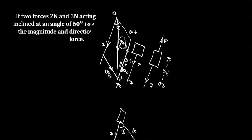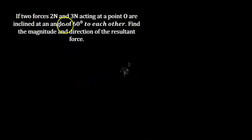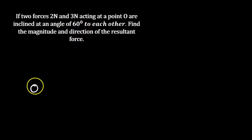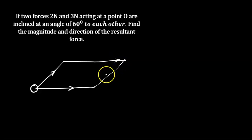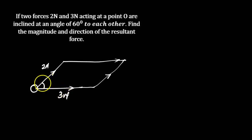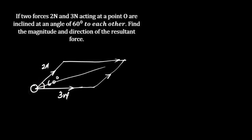Let's use this example to understand it further. Two forces — two newtons and three newtons — acting at a point O are inclined at an angle of 60 degrees. Parallelogram law of vectors tells us they form the two sides of a parallelogram. We complete the parallelogram so that this side is two newtons and this side is three newtons. Since they act at 60 degrees to each other, the resultant is the diagonal of this parallelogram.